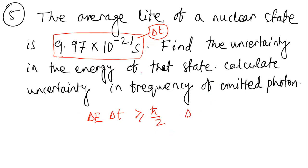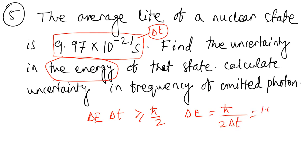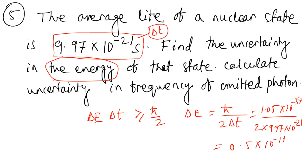So the uncertainty in energy ΔE = ℏ/(2·Δt) = 1.05 × 10⁻³⁴ / (2 × 9.97 × 10⁻²¹) ≈ 0.5 × 10⁻¹⁴ J. That gives us the uncertainty in energy of the nuclear state.